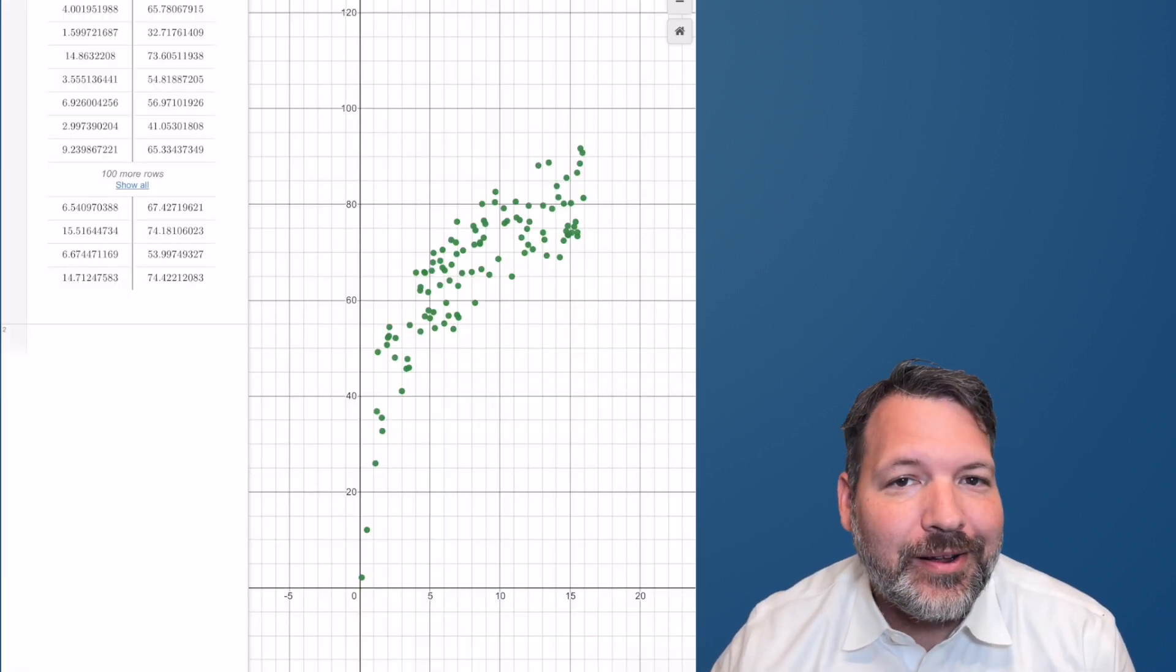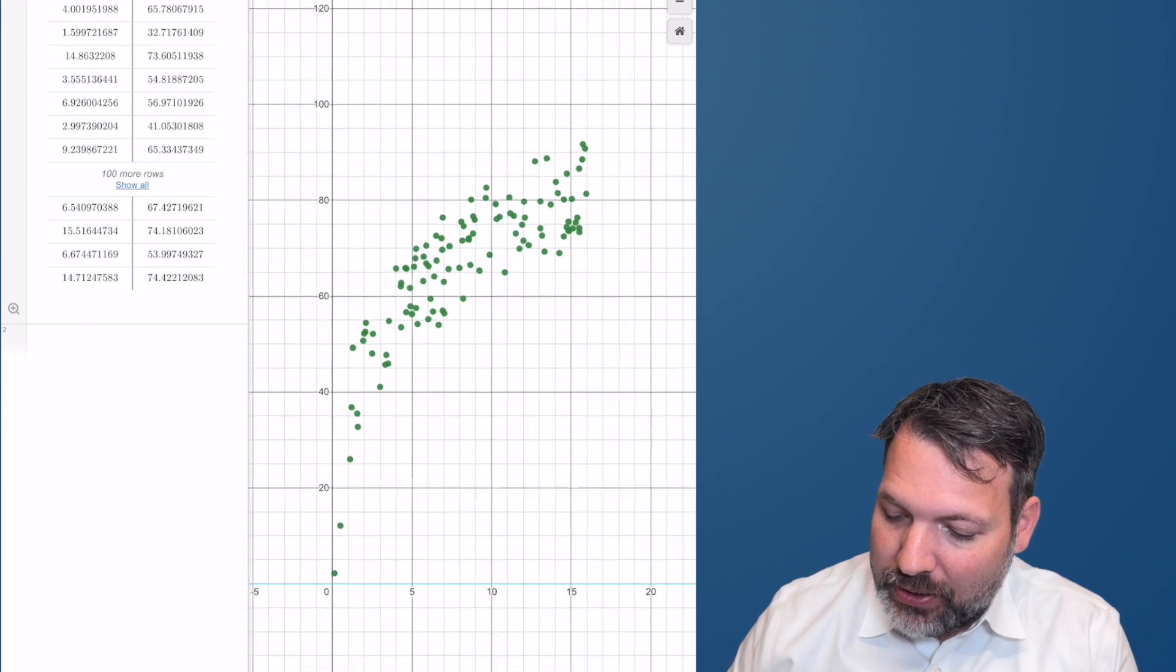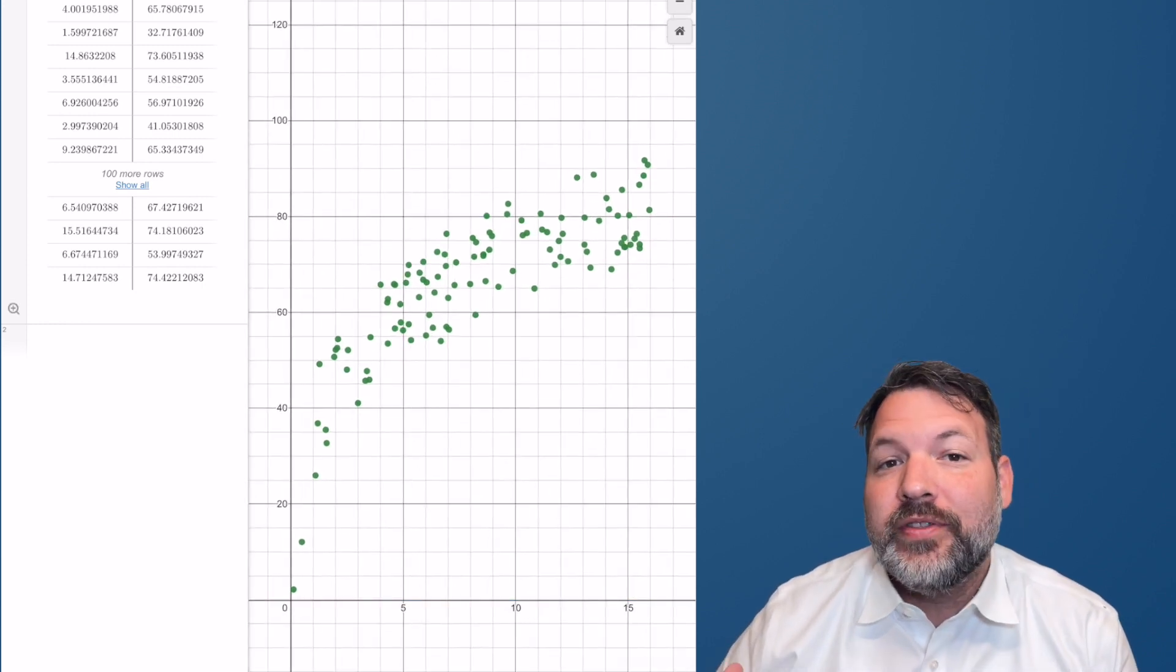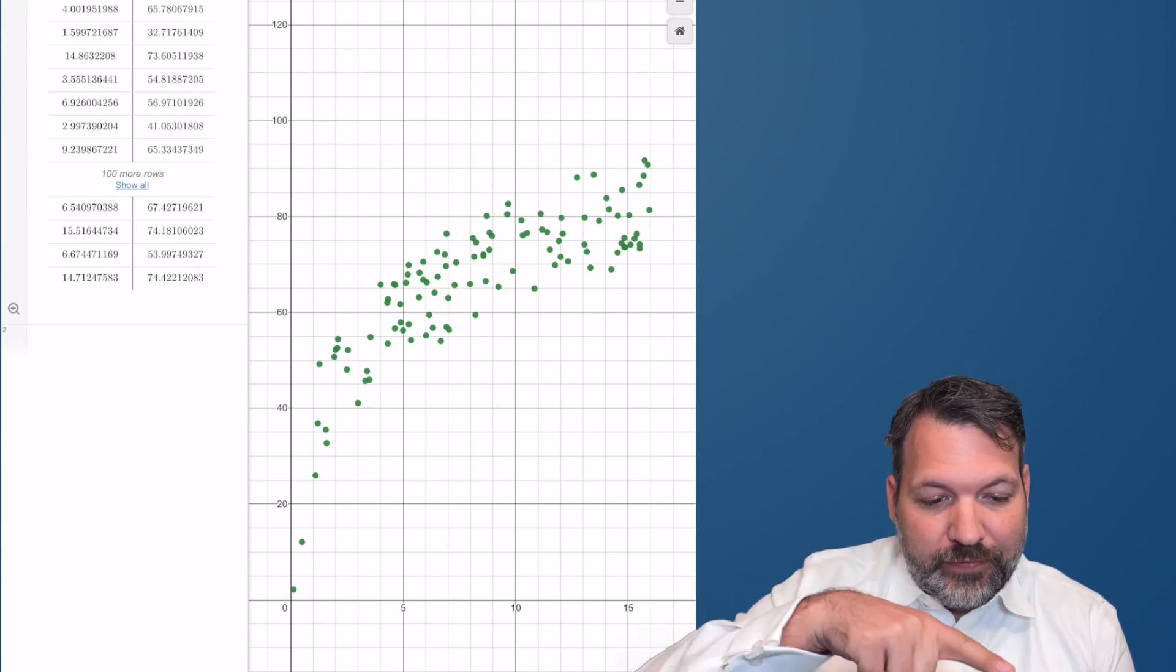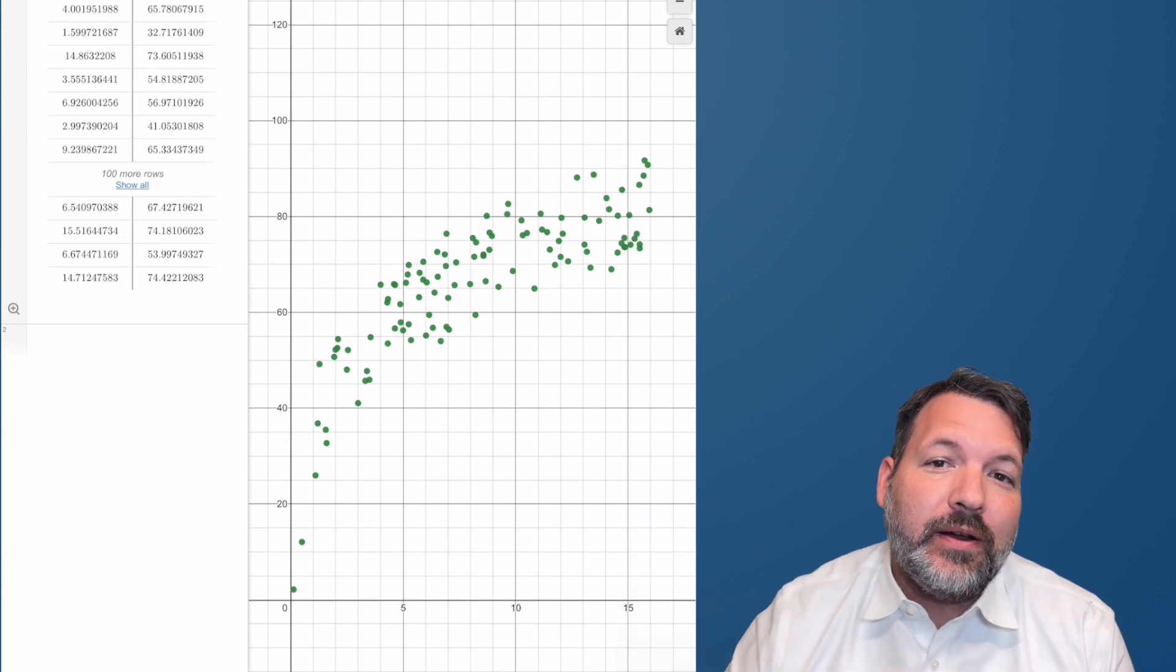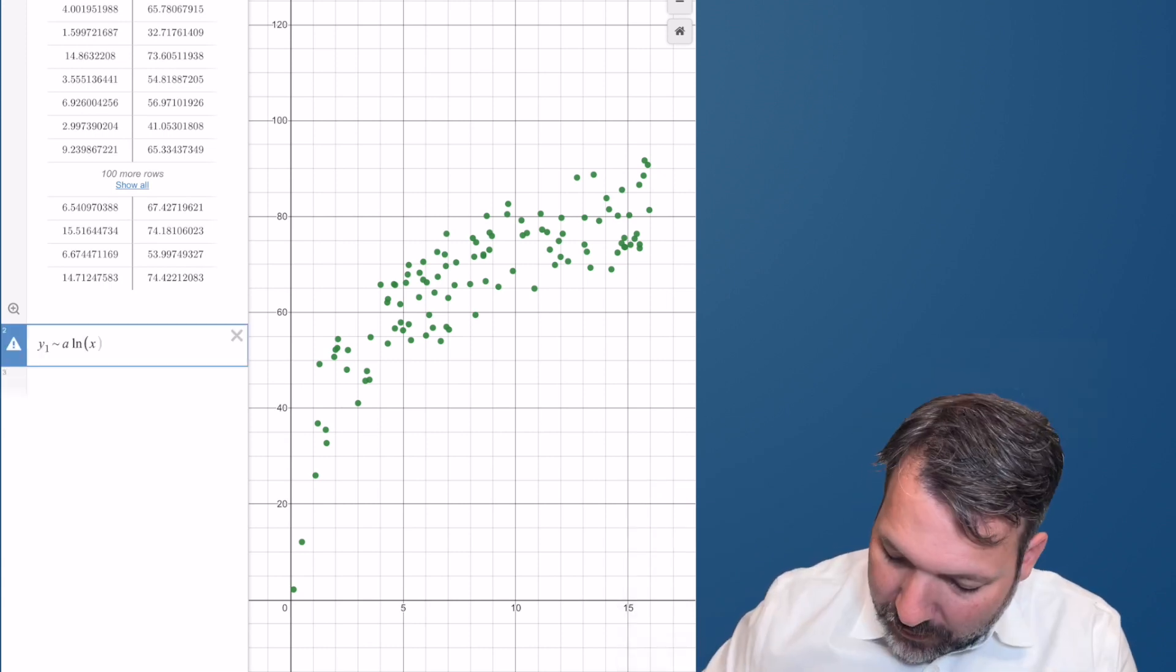So when you pull up the data, it doesn't necessarily look super logarithmic until you start to spread it out a little bit, and then you can start to see the shape of that familiar logarithmic curve coming from the negative y-axis, increasing relatively quickly at first, and then flattening out as it moves to the right.